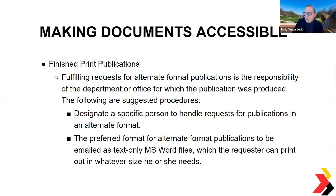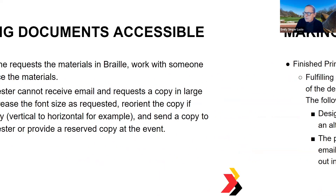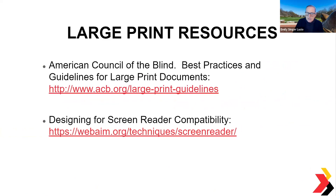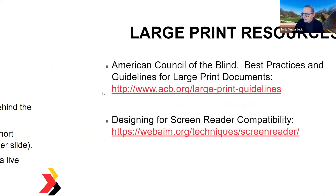For finished print publications, ensure they are in a file type that can be converted to braille or large print if necessary — email them as a text-only or MS Word file so their screen reader can process it. If someone requests braille, work with the ADS office who have contacts for that. If someone requests large print, increase the font size to their specification — they can tell you how large they want it. You may need to reorient the copy, for example vertical versus horizontal. You can also send them a copy electronically and reserve a copy for them at the event.